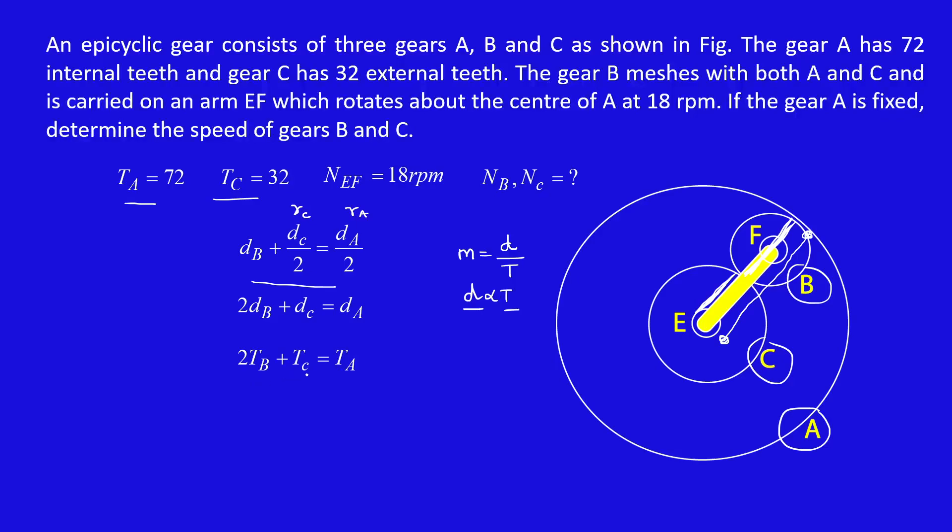So this is the equation: 2TB plus TC equal to TA. Here TC value 32, TA value 72. From that TB equal to 20. So this is the number of teeth on gear B.